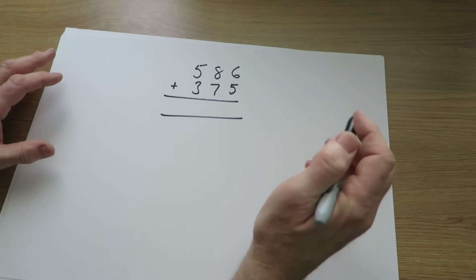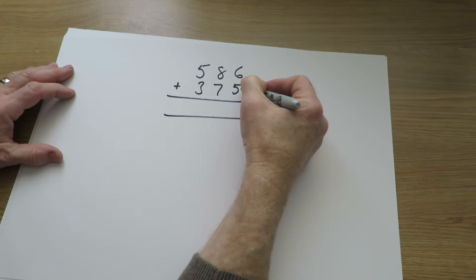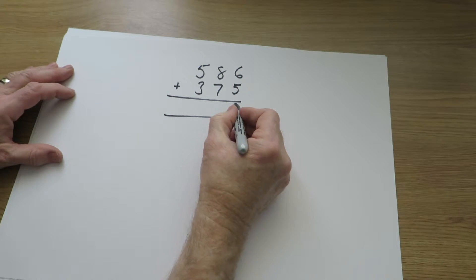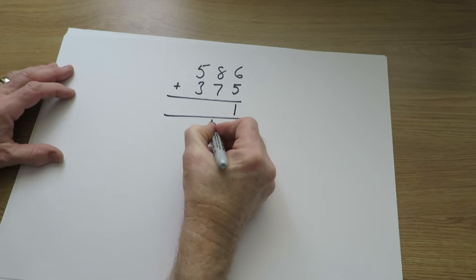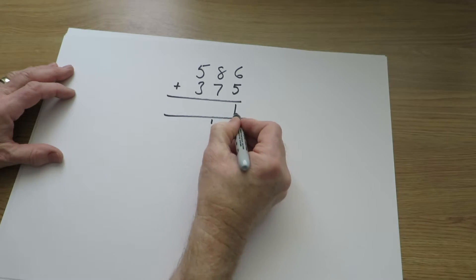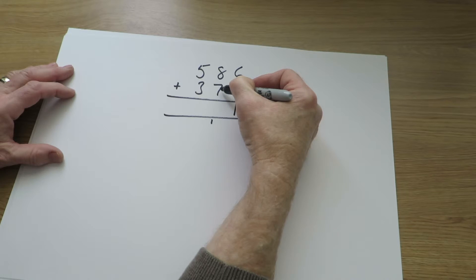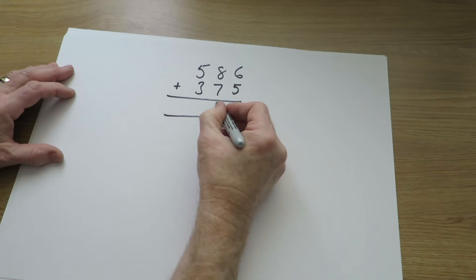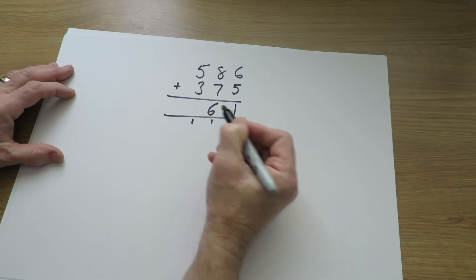Following the pattern that we saw with the equipment, 6 units and 5 units is 11 units. So 1 unit and 1 ten, that still says 11. 8 tens and 7 tens, that's 15. 16 tens, that gives us 6 tens and an extra 100.